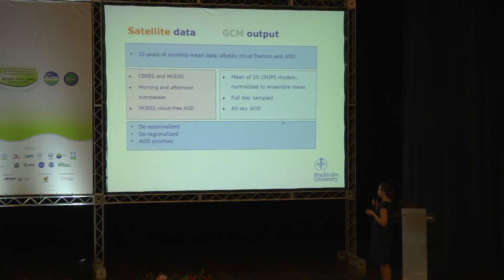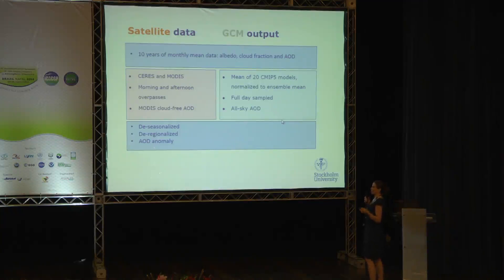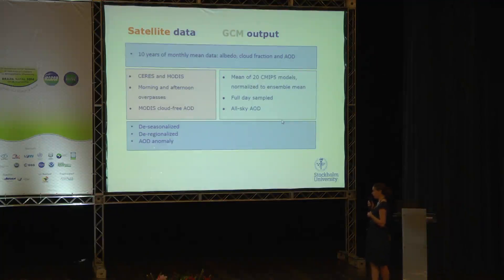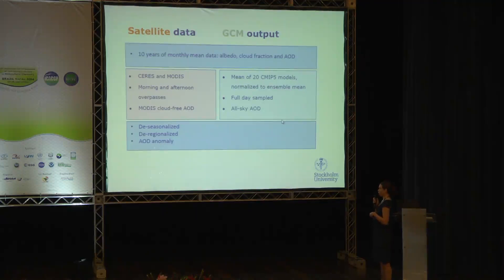We have 10 years of monthly mean data of albedo, cloud fraction, and aerosol optical depth. For satellite observations, we combine CERES and MODIS and can choose between morning and afternoon overpasses from the Aqua and Terra satellites. For MODIS, AOD information is only available for cloud-free cases. By comparison, for the models — a mean of 20 CMIP5 models normalized to the ensemble mean — we can sample the full day without overpass sampling issues and look at AOD for both cloudy and clear skies. We treat the data the same way: de-seasonalizing to remove the mean annual signature and looking at AOD anomalies rather than absolute values.